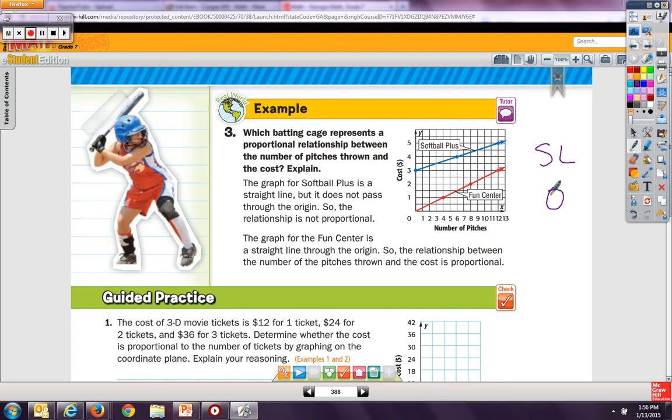So yes, they both meet that they're a straight line. The blue one meets that it's a straight line, and the red one meets that it's a straight line. But the red one is the only one that goes through the origin. So the relationship is not proportional for softball plus. Not proportional. And this is proportional. So go ahead and do one, two, and three, and bring that to class.